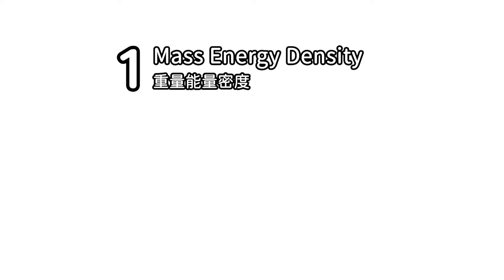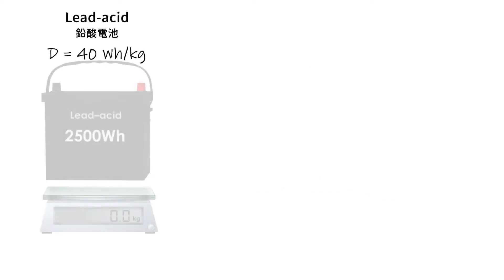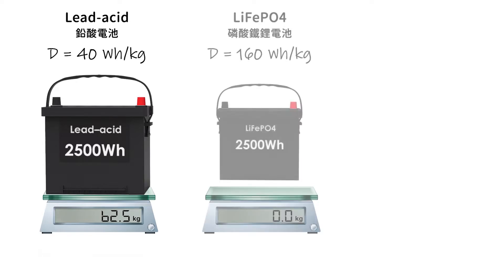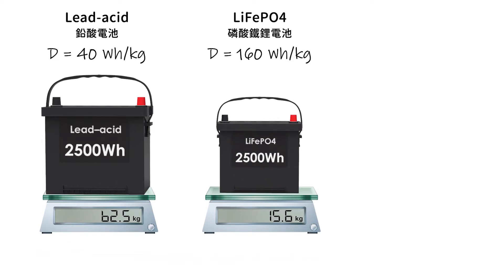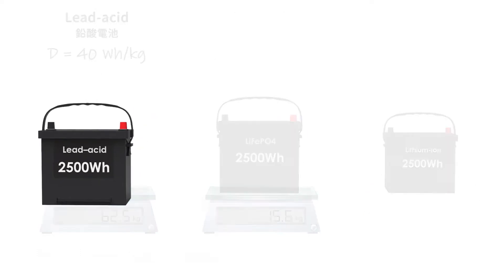1. Energy density means how much energy a battery contains while keeping the weight the same. Batteries with high energy density will be lighter than batteries with low energy density. This measurement is usually expressed in watt-hours per kilogram. On the condition of storing 2.5 kilowatt-hours of electricity, the energy density of the lead-acid battery is 40 Wh/kg, calculated weight is 62.5 kilograms. Lithium-ion phosphate battery has an energy density of 160 Wh/kg, calculated weight is 15.6 kilograms. Li-ion battery has an energy density of 195 Wh/kg, calculated weight is 12.8 kilograms.